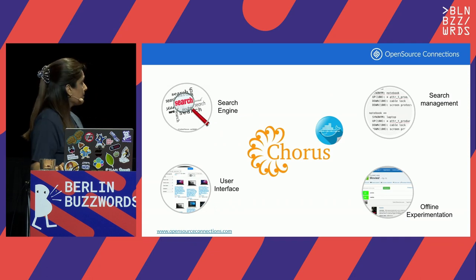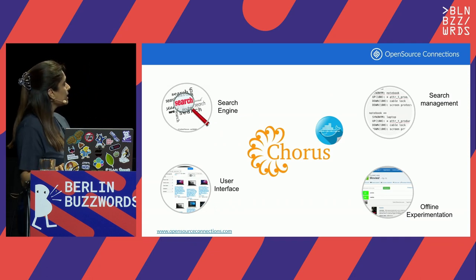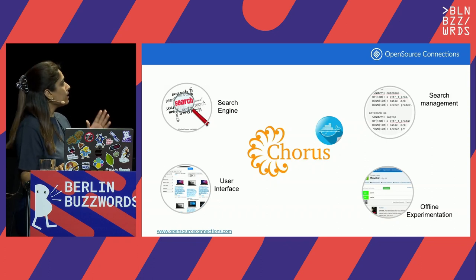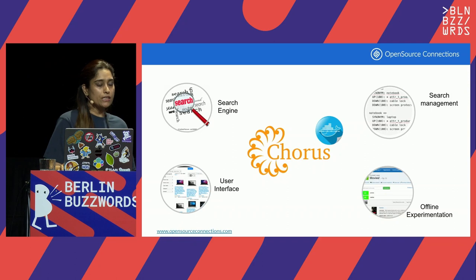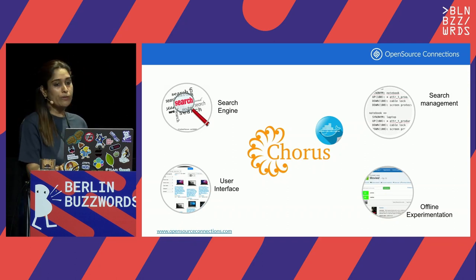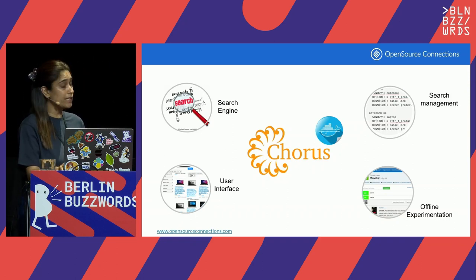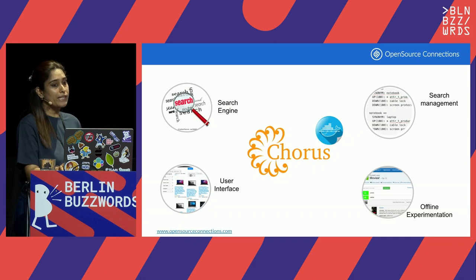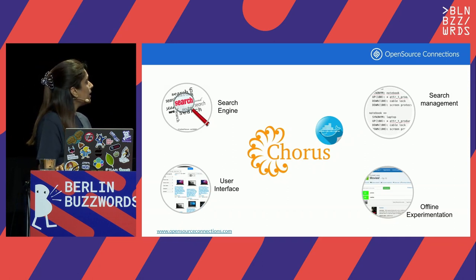One of my personal recommendations is that you could leverage Chorus as the foundational framework to accelerate your initial development process. Chorus is basically a dockerized toolset that has full-fledged support for a search engine, a user interface, and search management capabilities provided by Querqy — a query-rewriting library that we have intensively used for vectorizing the search engine. The offline experimentation component, which is the important part, is taken care of by Quepid. I would also be sharing results later in the slides about how we can leverage all of these.